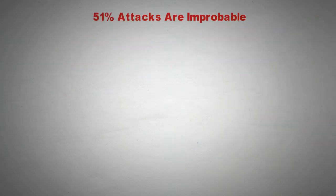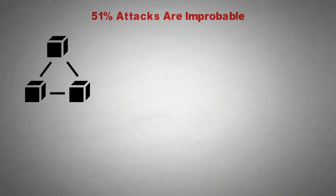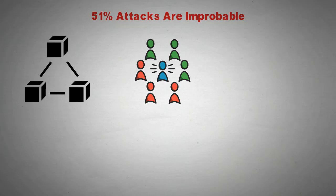51% attacks are improbable. The longer a blockchain exists and the more new users it attracts, the less likely it is to suffer a 51% attack due to its growing hash power.